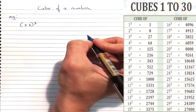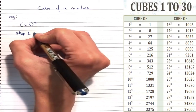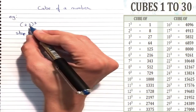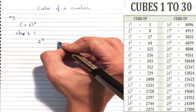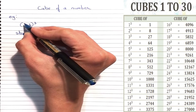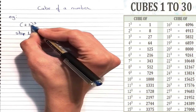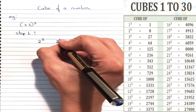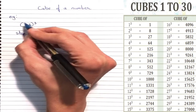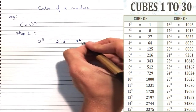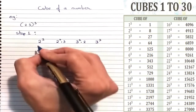Let's take an example. If we want to find the cube of 23, then in step number 1, we would first take the cube of 2, which is our first digit. Then we will multiply 2 squared into 3 — that is, the square of the first number multiplied by the second number. Next, we will take 3 squared into 2, which is the square of the second number into the first number, and then 3 cube.